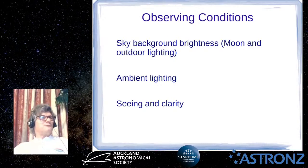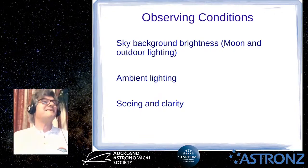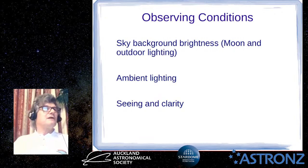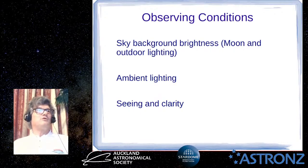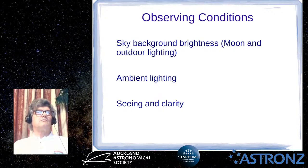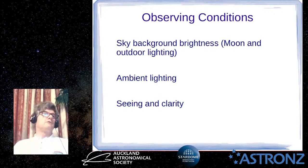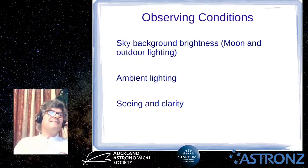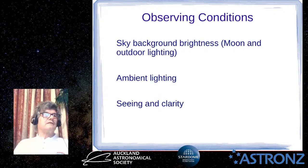Apart from the eye, we have to worry about observing conditions. There's the sky background brightness, caused by the moon of course, and outdoor lighting in urban areas — street lights, house lights, security lights. Then there's the ambient lighting right where you are; you might have a reasonably dark sky but a really bright security light shining in your eyes. The other aspect of observing conditions is the seeing and clarity of the sky.